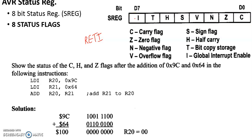The I-bit can also be set and cleared by the application with the SEI — Set Global Interrupt Flag — and CLI — Clear Global Interrupt Flag — instructions. These instructions can be used to set and clear the global interrupts in AVR controller to control the interrupt system.